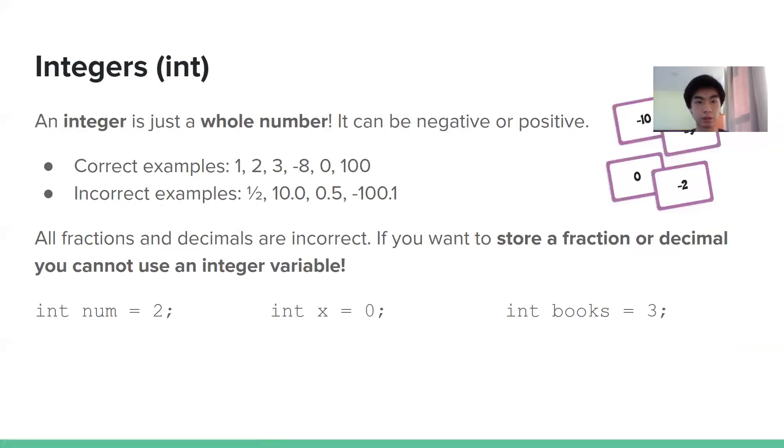So integers. Integers are just simply whole numbers. It can either be positive or negative. So the following samples would work like one, two, three, negative eight, zero also works. But incorrect, one half, because that's a fraction. Negative 100.1, that's also, that's a decimal.